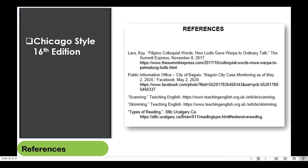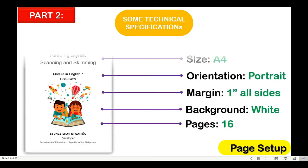So we're done with the elements. This time, let's just go over some technical specifications that will guide you on the format of your learning material. With regards to the page setup, the learning module uses A4 for paper size, in portrait mode, with 1-inch margin on all sides, a white background, and ideally for key stages 3 and 4, 16 pages of the body text.